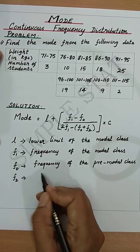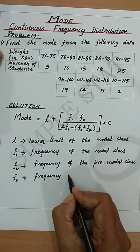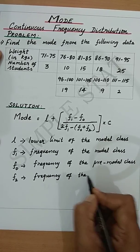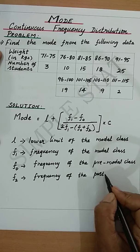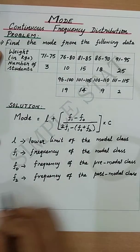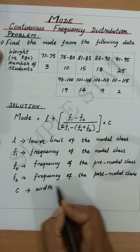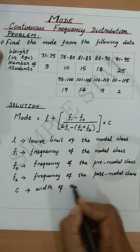F2 denotes frequency of the post-modal class and C denotes width of the class interval.